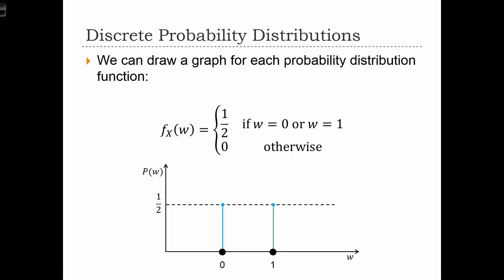We can draw a graph for each probability distribution function. In this graph, along the bottom are the different potential outcomes of the random variable. In this case, the random variable is 0 when w is heads, and 1 when w is tails. In each case, we know the probability of the random variable being 0 or 1.